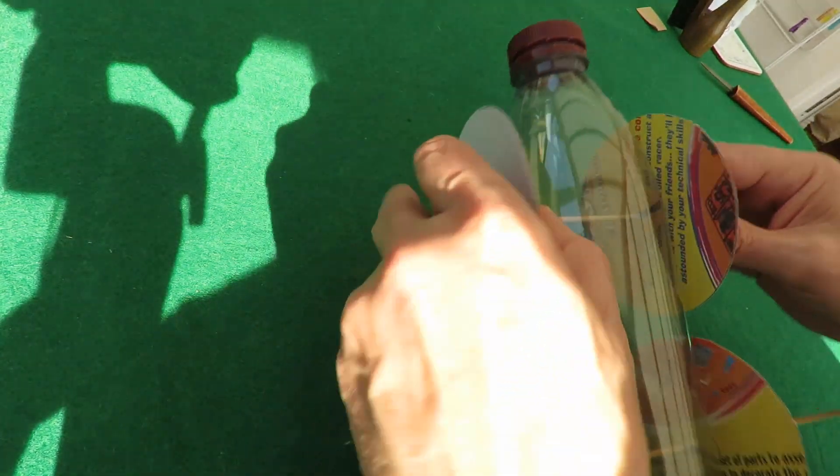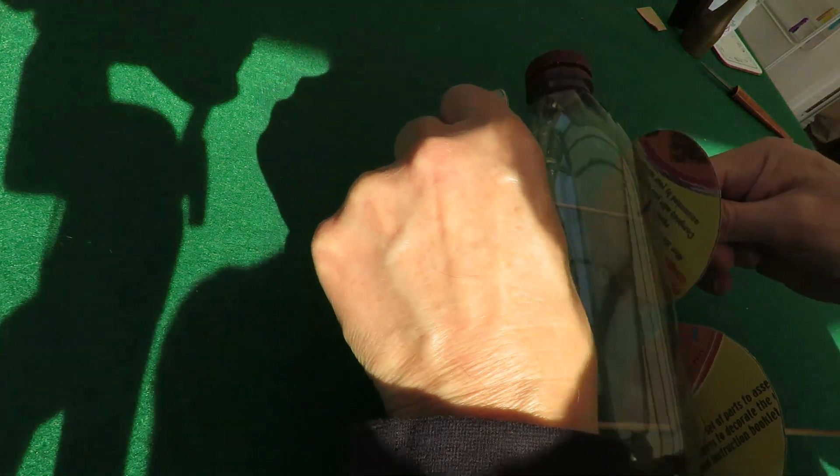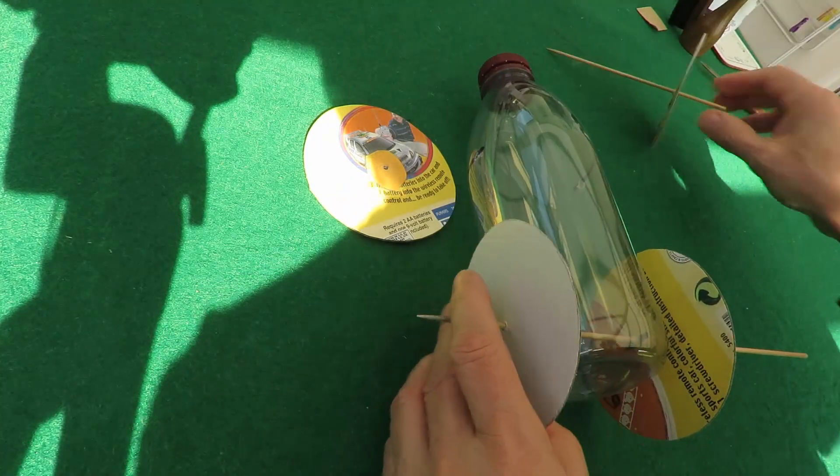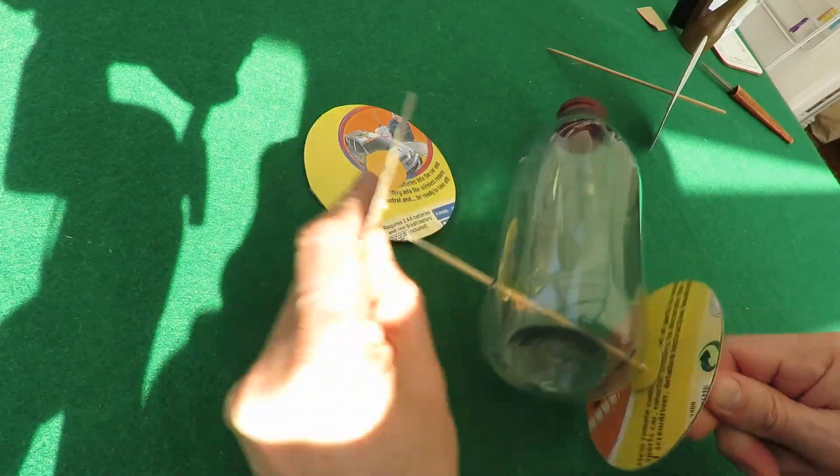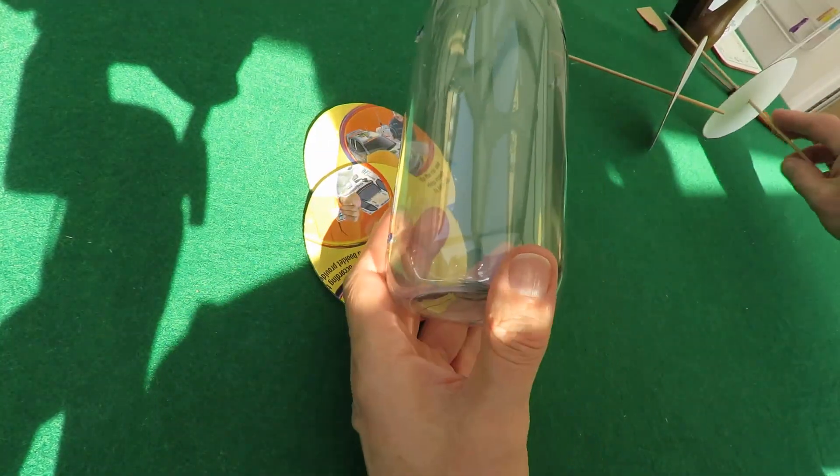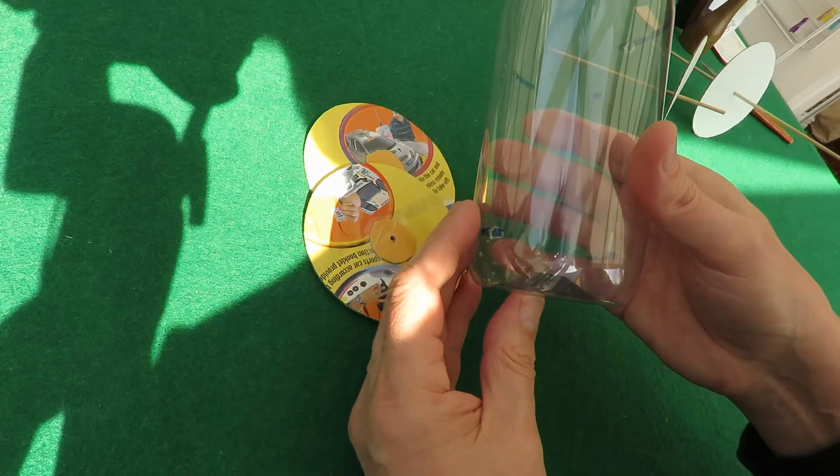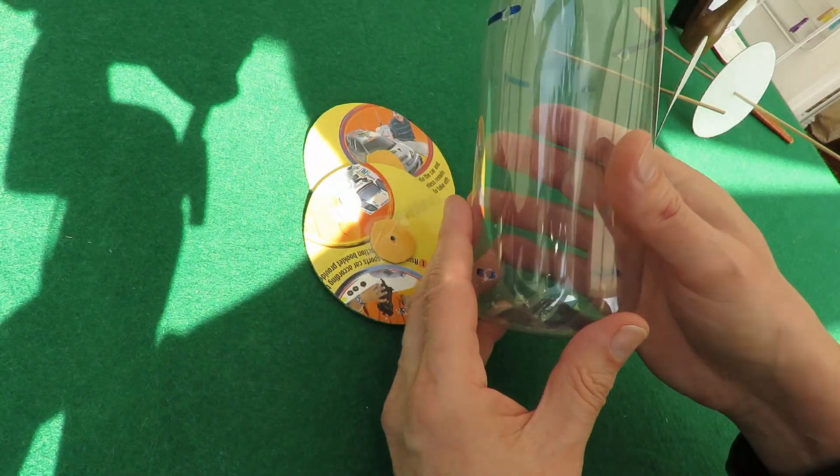So first thing I'm going to do is take the wheels off again because there's a good chance I'll actually break them if I'm trying to modify the bottle with the wheels still attached.